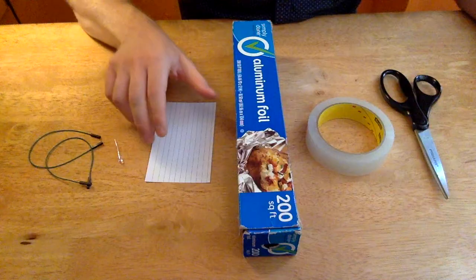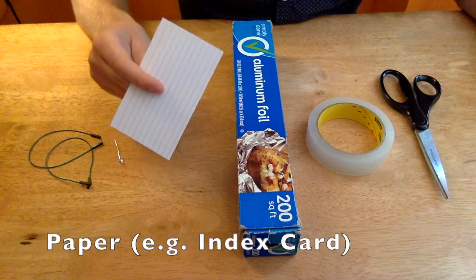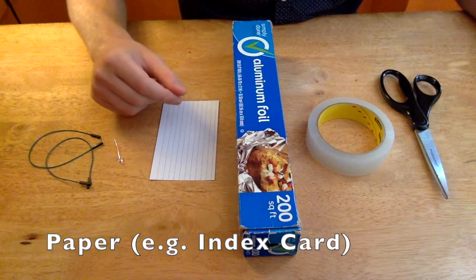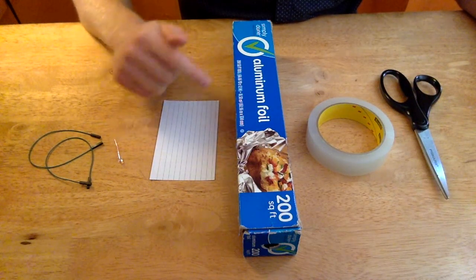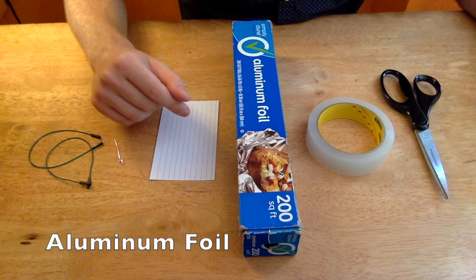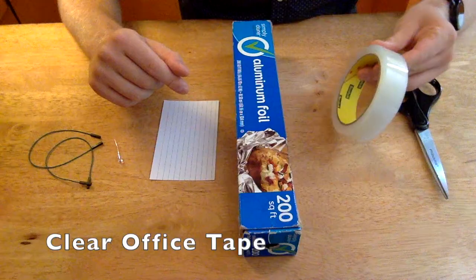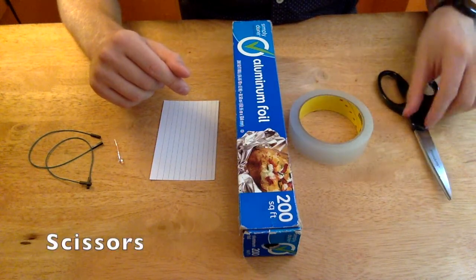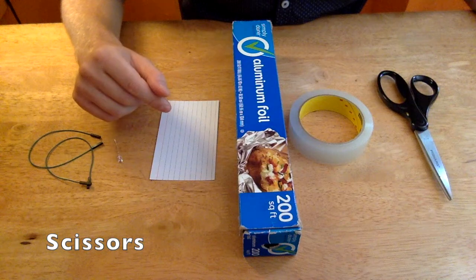A piece of paper like an index card or something else that's a little bit more sturdy. And then we're going to need some aluminum foil—any kitchen aluminum foil should do fine. You'll need some clear transparent office tape and a pair of scissors to help us cut some of these things up.